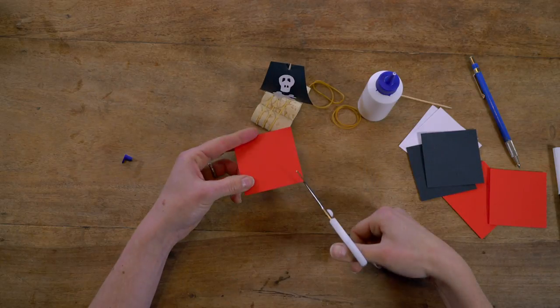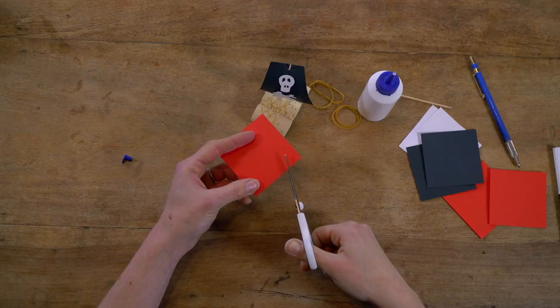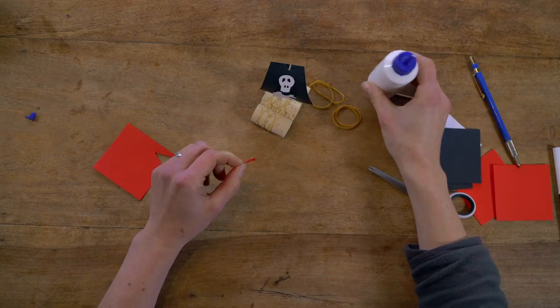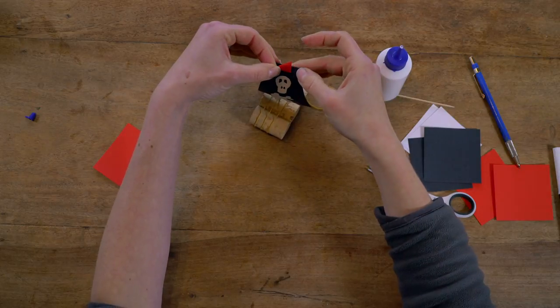Choose any color you want to make the flag. We've gone for red for danger. Now use glue to attach it to the top of the cocktail stick.